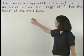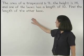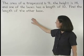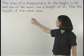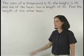The area of a trapezoid is 91, the height is 14, and one of the bases has a length of 10. Find the length of the other base.